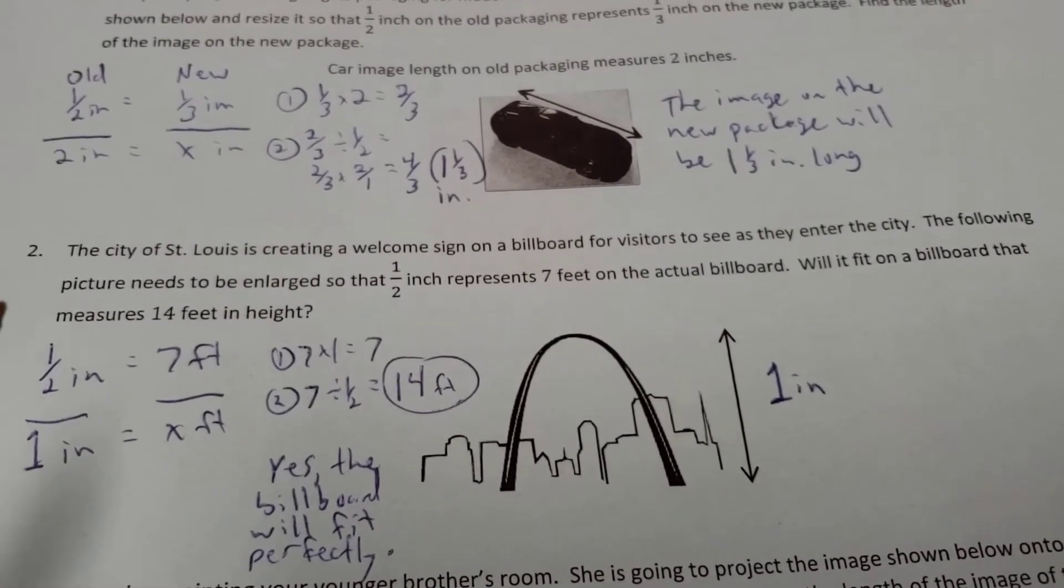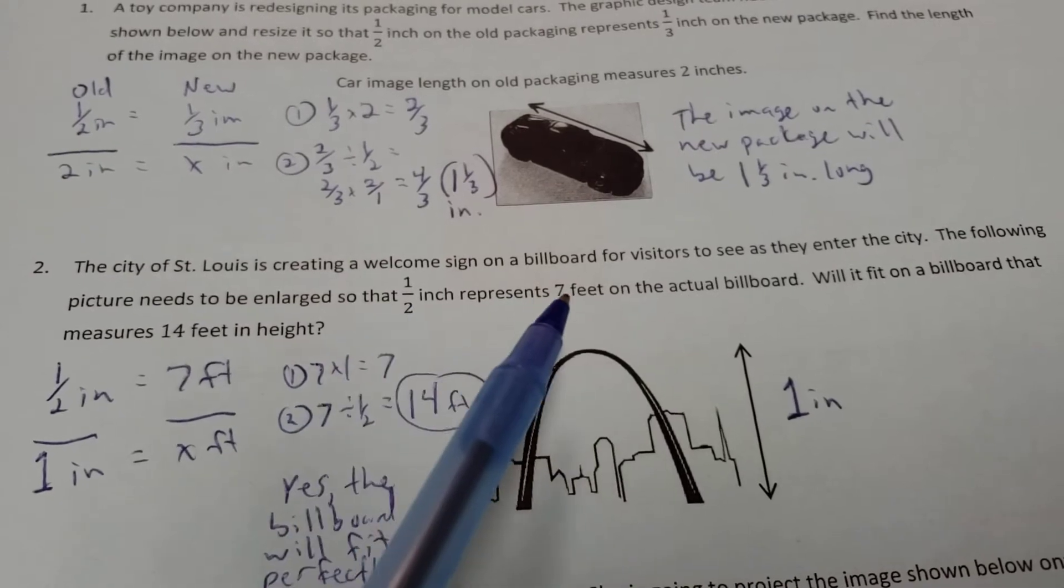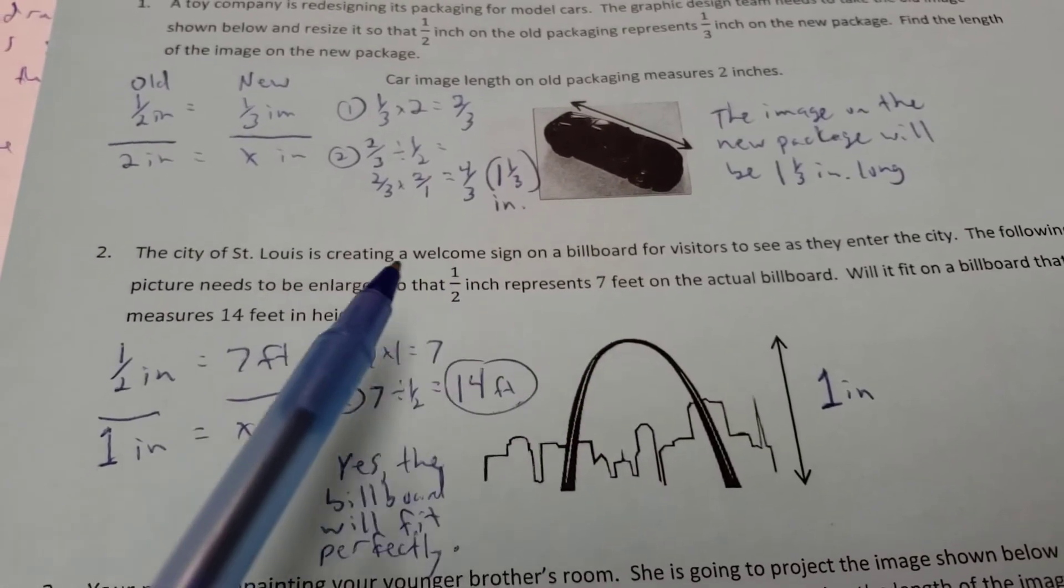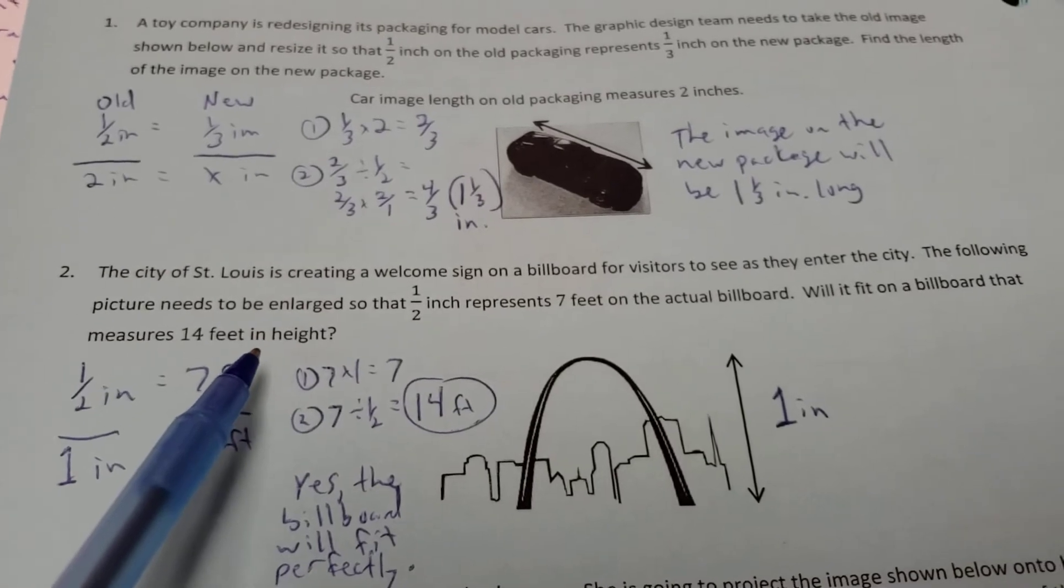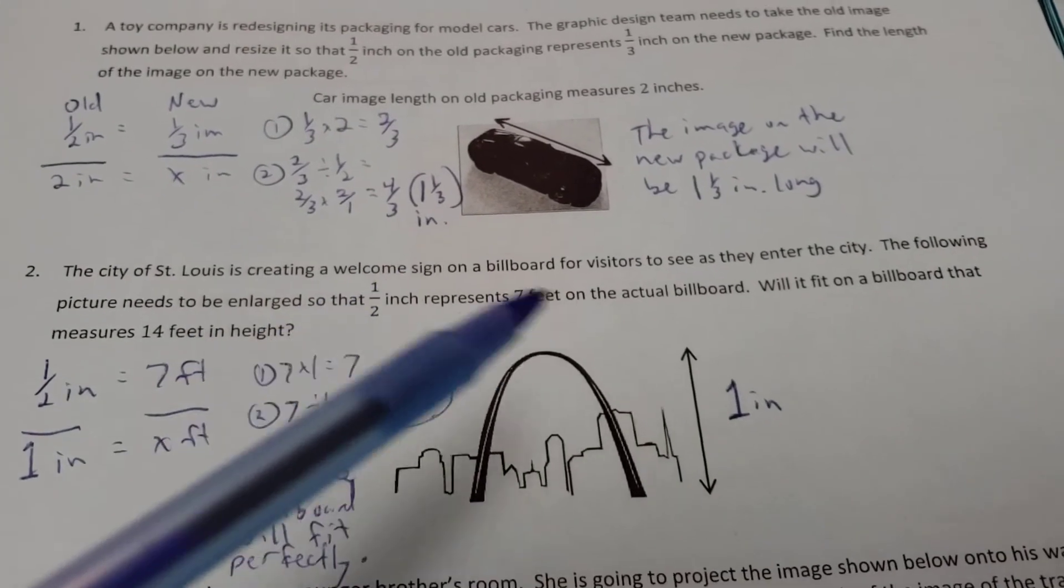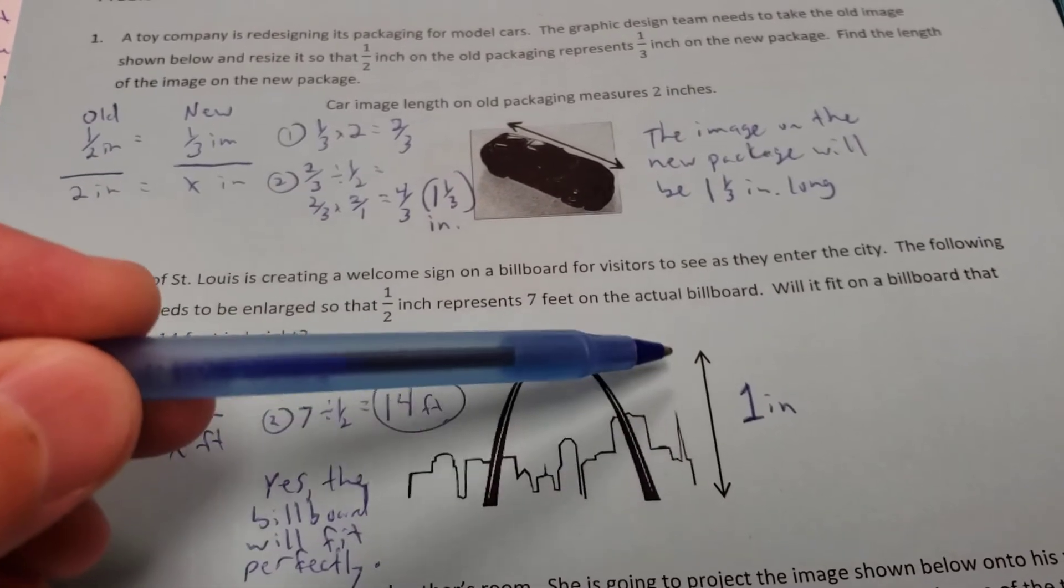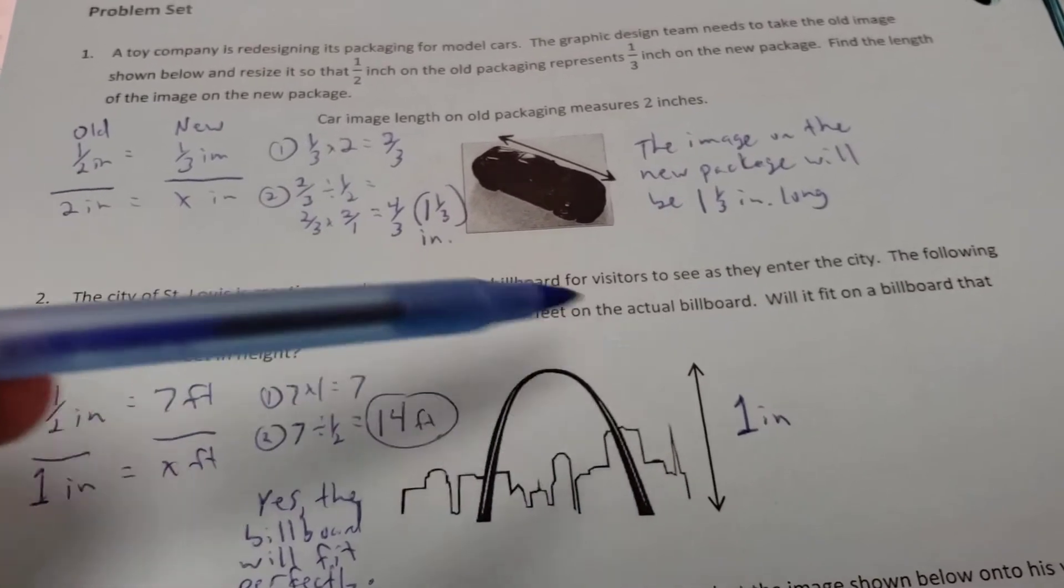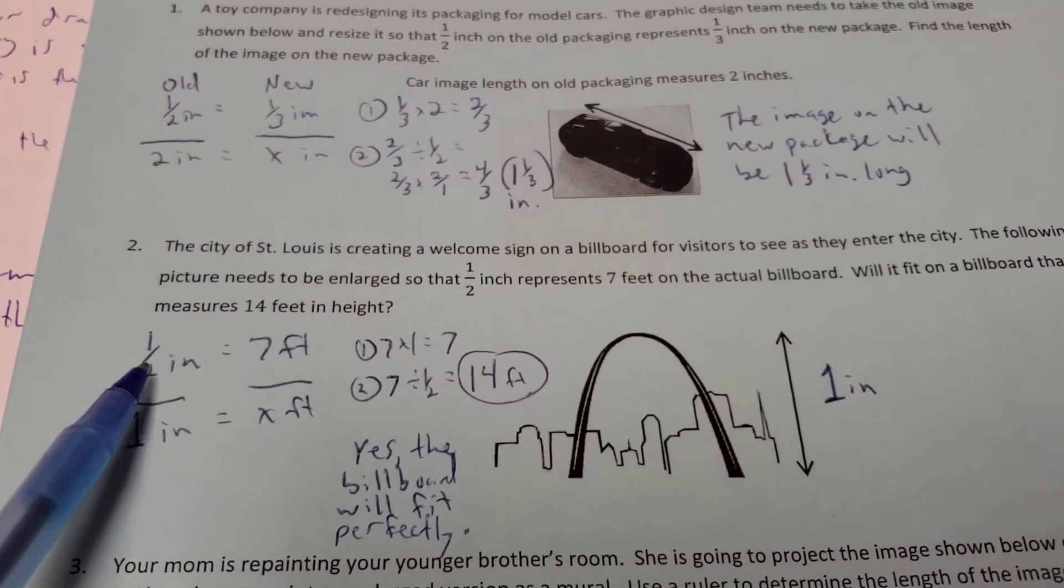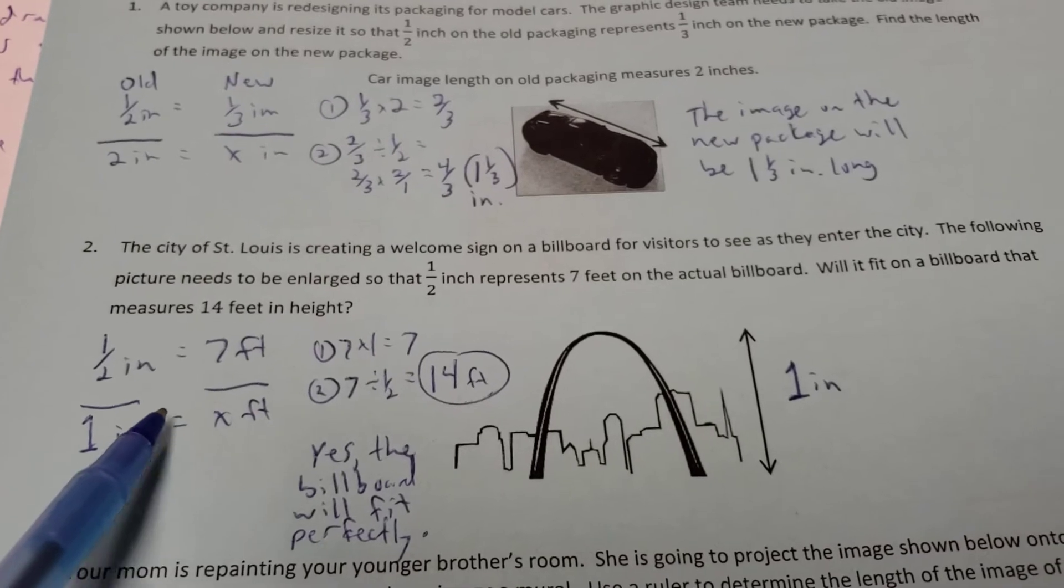And in St. Louis, they're creating a welcome sign, and the scale is one-half inch represents seven feet. Well, if the billboard itself is actually going to be 14 feet in height, will this actually fit? So let's go over to the picture here. This is one inch tall, so I'm going to figure out what that's going to translate to. So the scale is a half inch is supposed to equal seven feet. So one inch will equal how many feet?